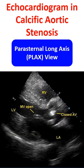Diastolic frame in aortic stenosis from parasternal long axis view showing aortic valve in closed position and mitral valve in open position. The marker is indicating the anterior mitral leaflet. Dense calcification of the aortic valve is evident.